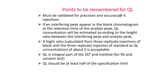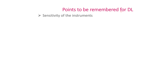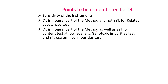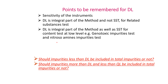QL should be at least half of the specification limit. Key points for DL: DL tells about the sensitivity of the instrument and method. DL is an integral part of the method and not system suitability for related substances tests. DL is an integral part of the method as well as system suitability for content tests at low levels — for example, genotoxic impurity tests and nitrosamine impurity tests. Questions to consider: Should an impurity less than DL be included in total impurity or not? Should an impurity more than DL but less than QL be included in total impurity or not?